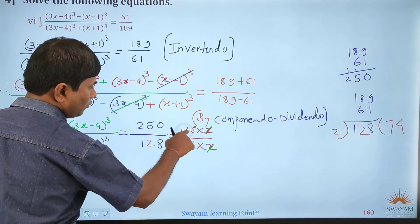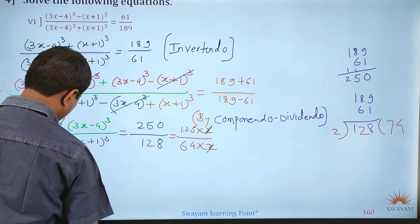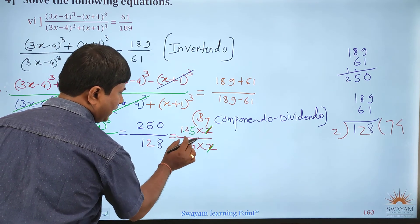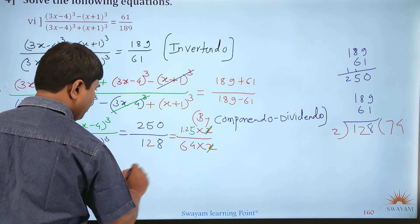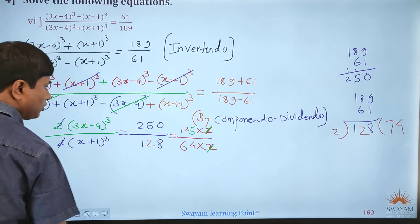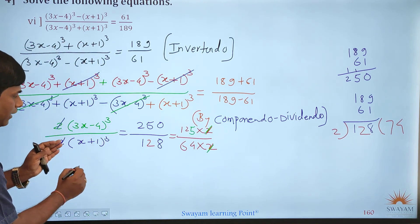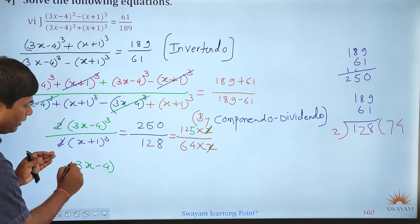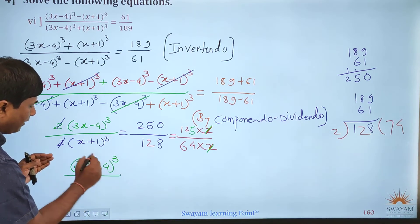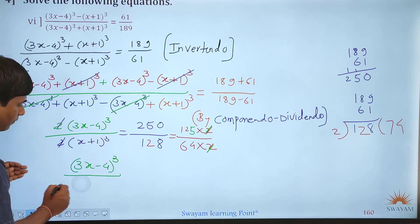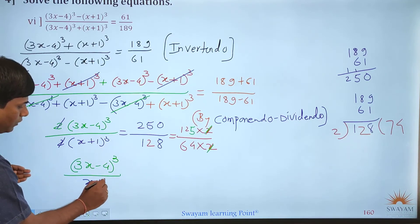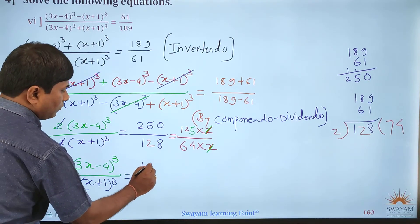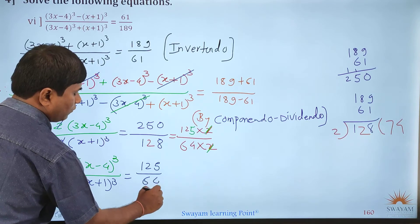After further simplification the 2 and 2 cancel. Then 250 and 148 simplify: 189+61 is 250, and 189−61 gives us 128. After simplification we get (3x−4)³ divided by (x+1)³ is equal to 125 divided by 64.